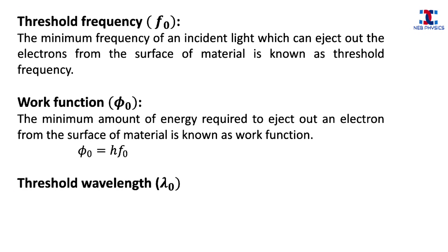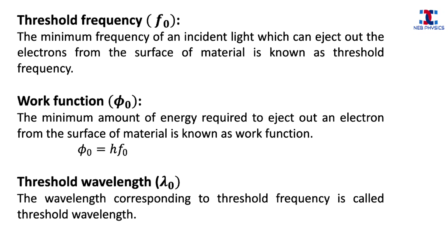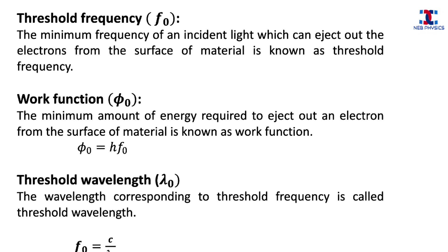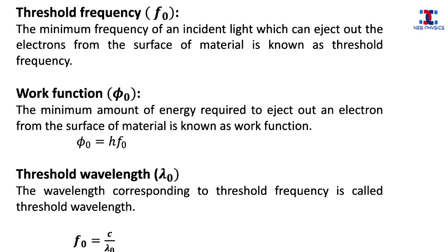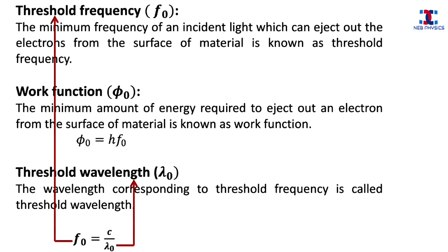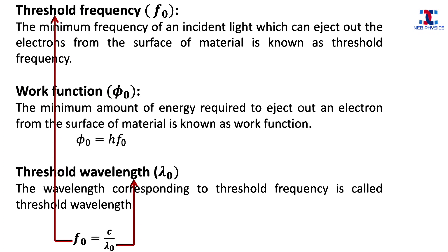The next term is threshold wavelength. Threshold wavelength is the wavelength corresponding to the threshold frequency, and the relation between them is: threshold frequency equals the velocity of the photon divided by threshold wavelength.